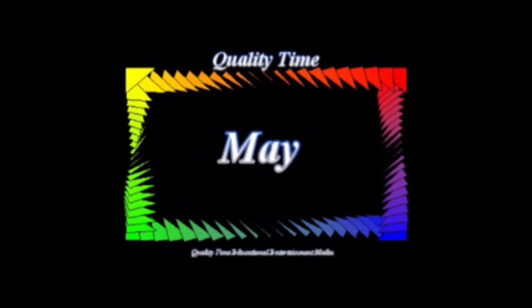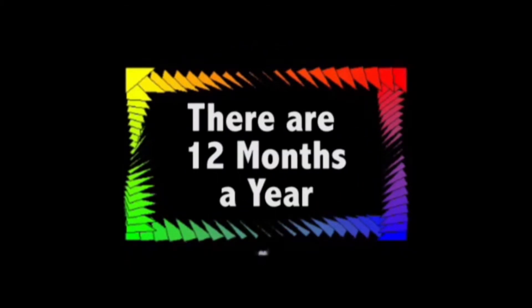January, February, March, April, May, June, July, August, September, October, November, December — there's 12 months in a year.